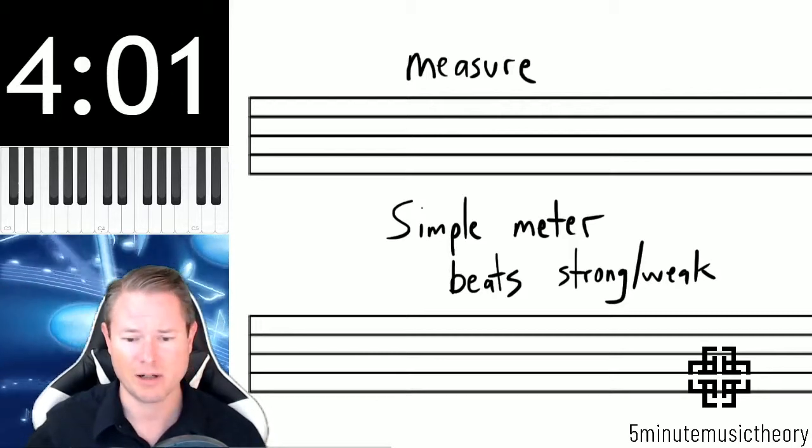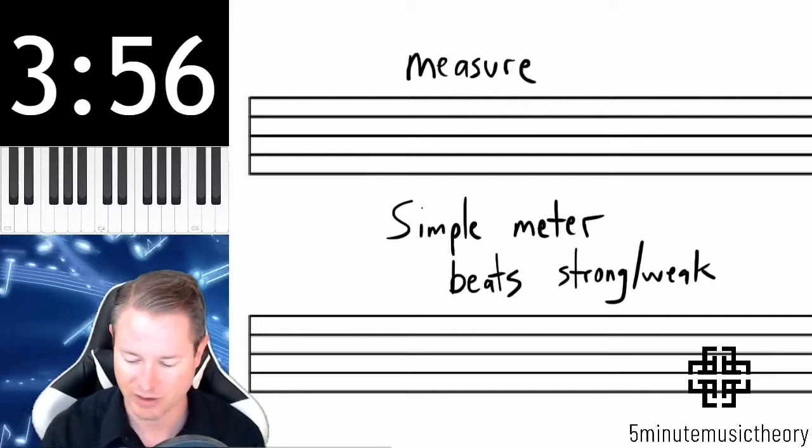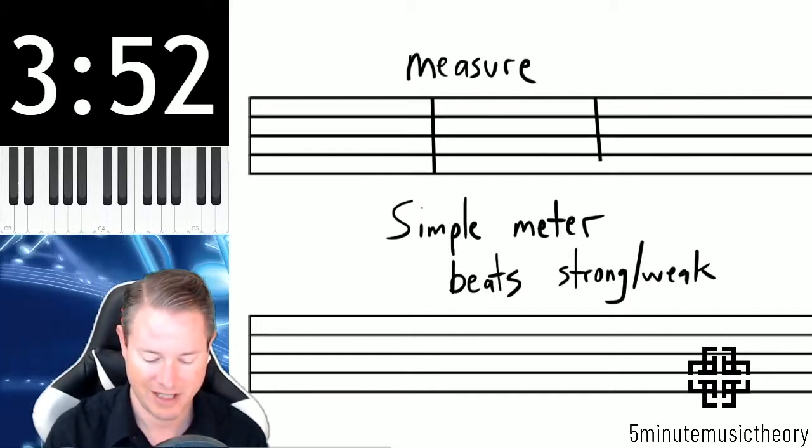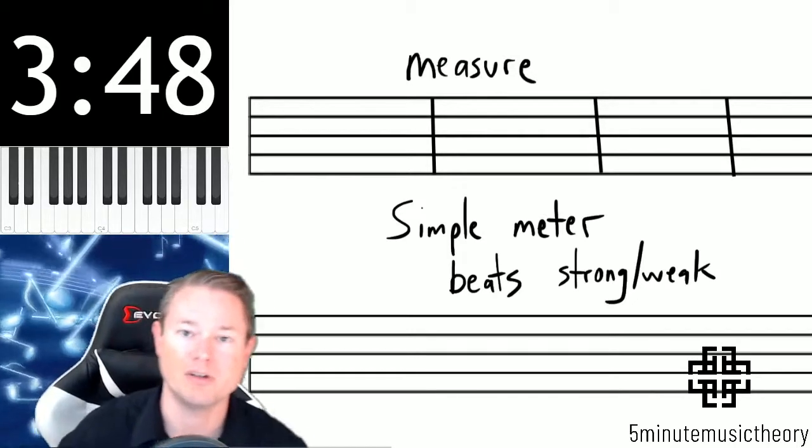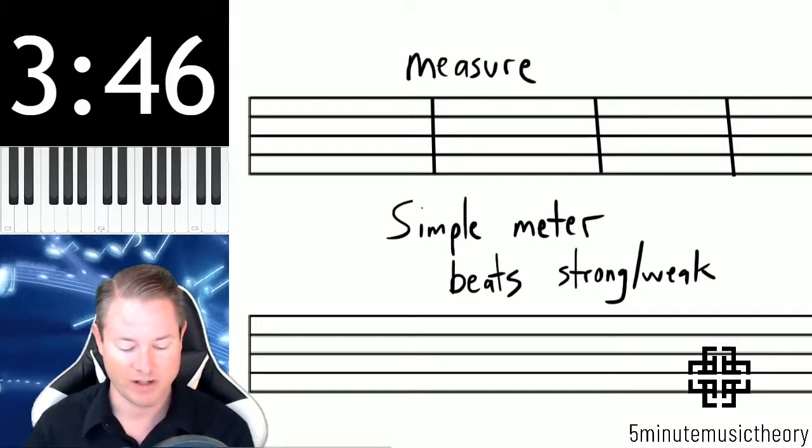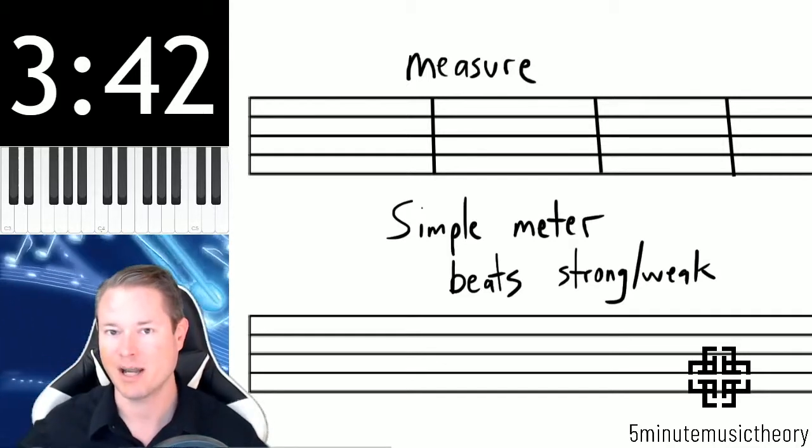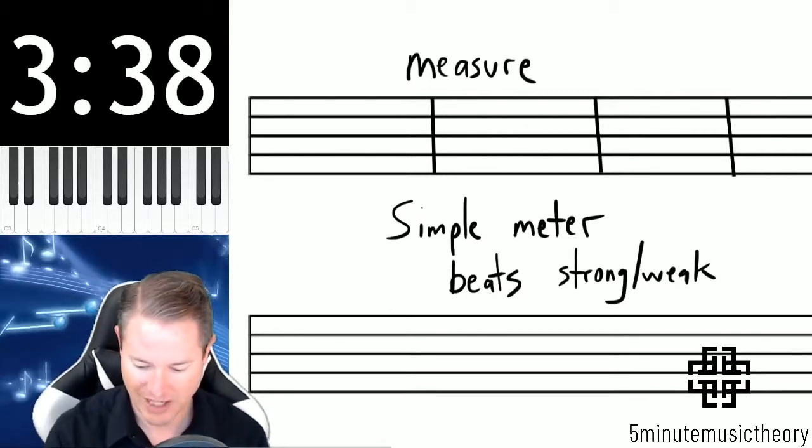Notes are placed into small blocks of time which are called measures, and the way that measures are divided on the staff is with these vertical lines. Although those aren't exactly vertical, each one of those is one measure, and each measure takes up the same amount of time rhythmically. Sometimes measures are referred to as bars.